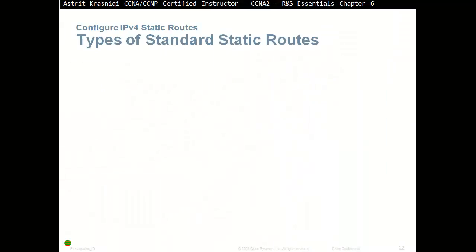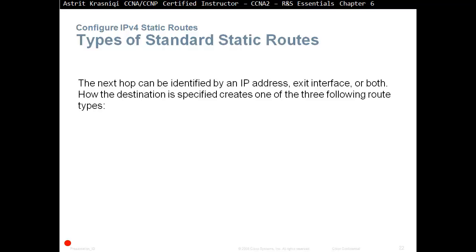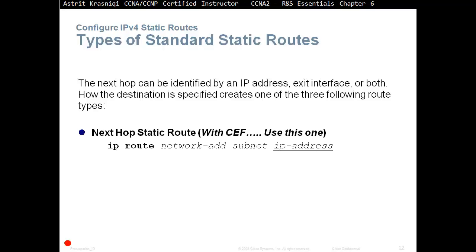Types of standard static routes: the next hop can be identified with an IP address, exit interface, or both. How the destination is specified creates one of three route types. We have a next hop static route — with CEF, use this one. So: ip route, network address, destination subnet mask, and then the IP address of the neighbor. Or we can have a directly attached static route, which says ip route, destination network address, destination subnet mask, and then our exit interface.